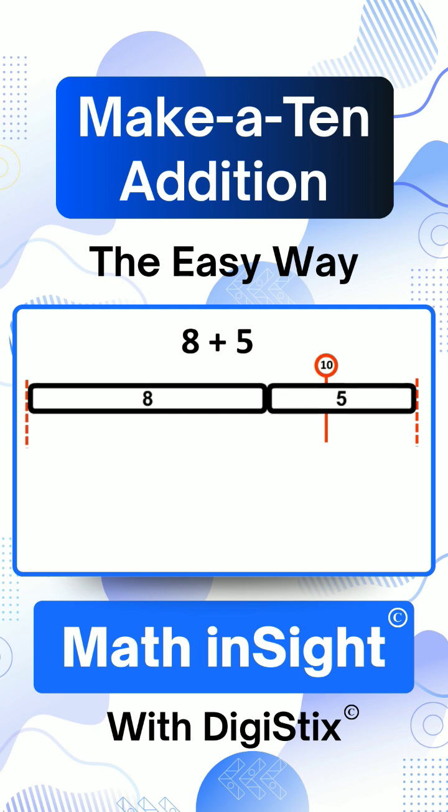To add 8 and 5, we need to find the number shown by the arrow. It's the total, which is how many we get when we put 8 and 5 together.